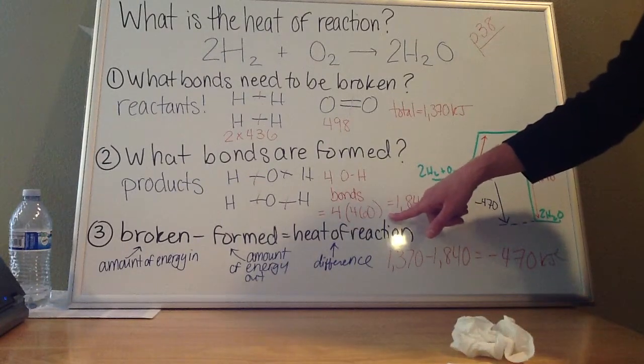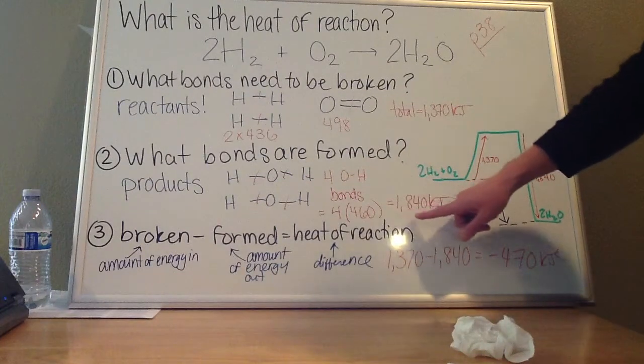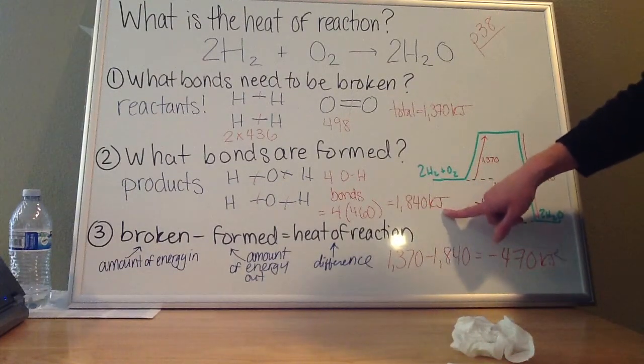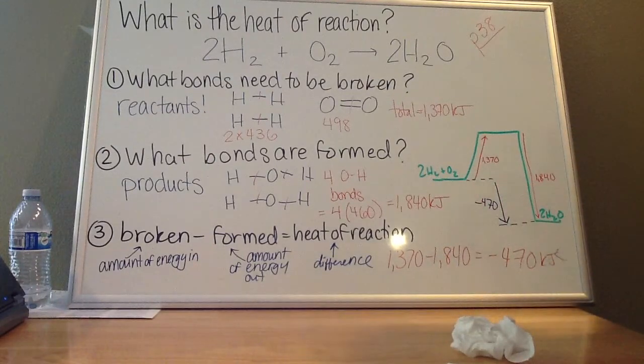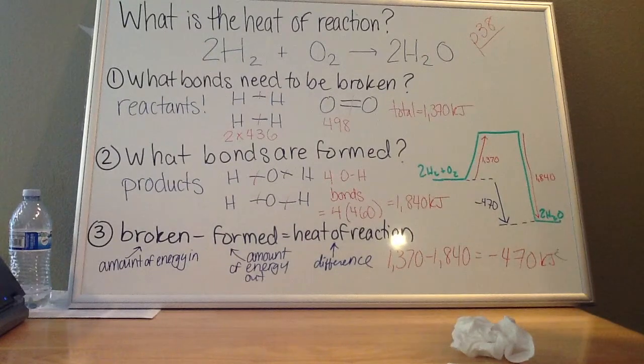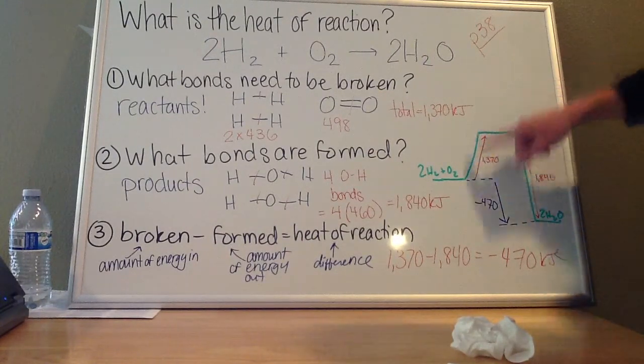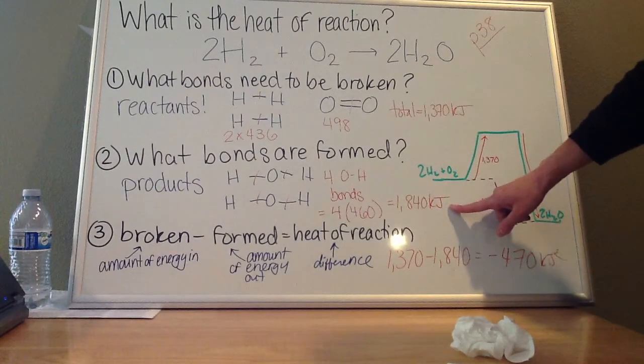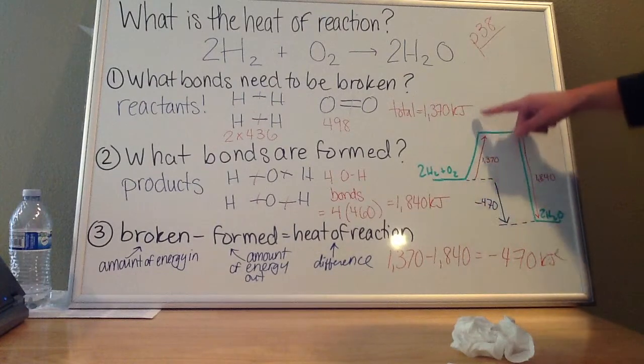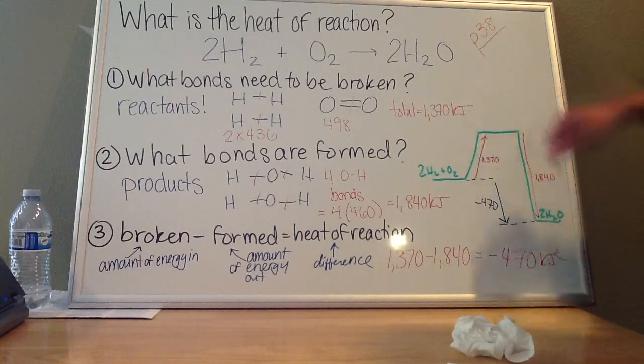So if I add up the energies of all four of these bonds, I'll find that it's 1,840 kilojoules of energy. And that's how much energy is going to be released when I form these bonds over here in my products. So right now I'm using up 1,370 kilojoules, and I'm releasing 1,840 kilojoules. Notice how I'm releasing more energy than I am using up. So it looks like overall this reaction is going to be exothermic.